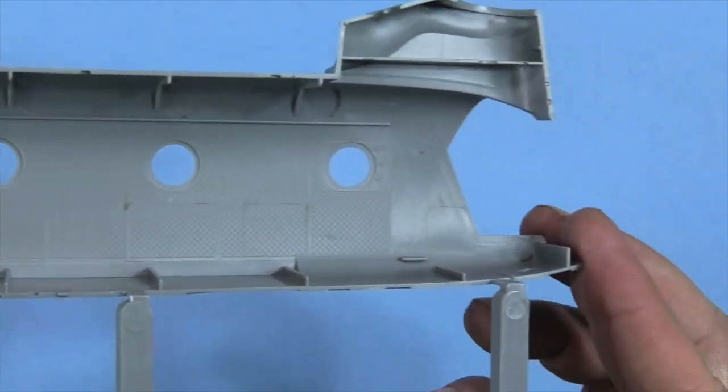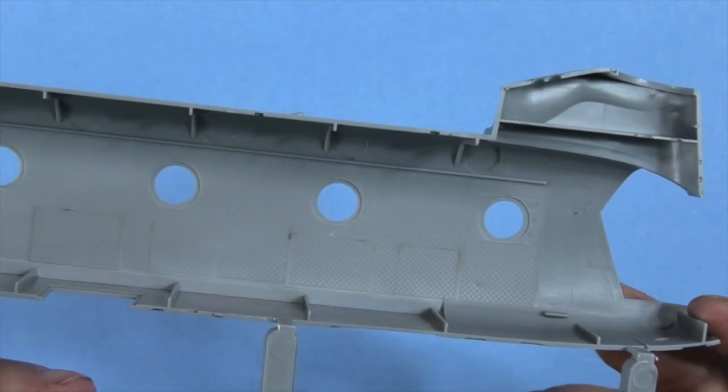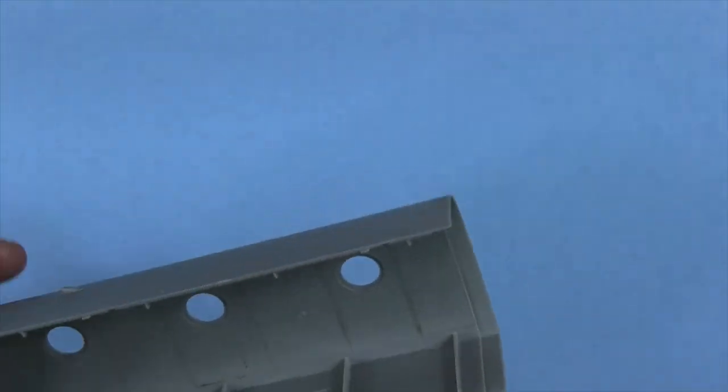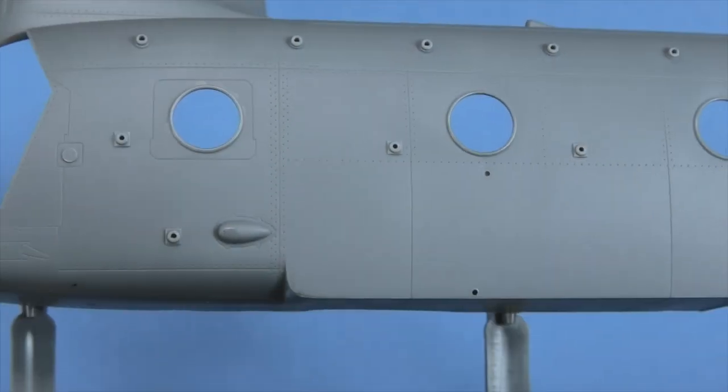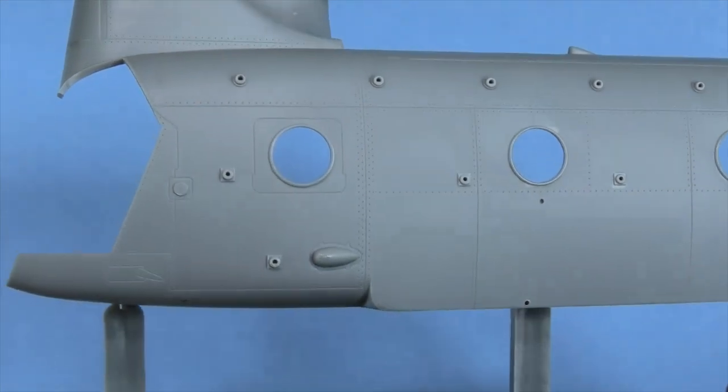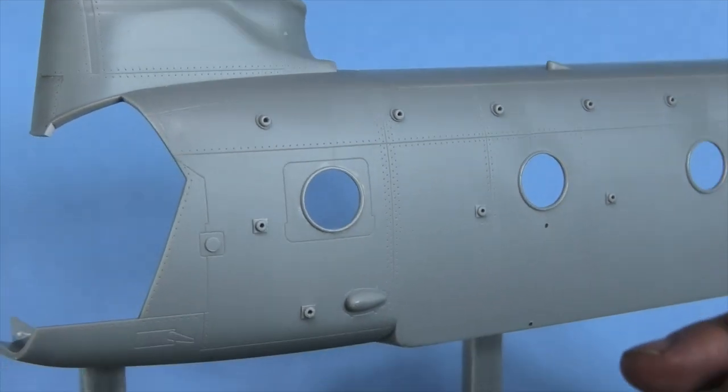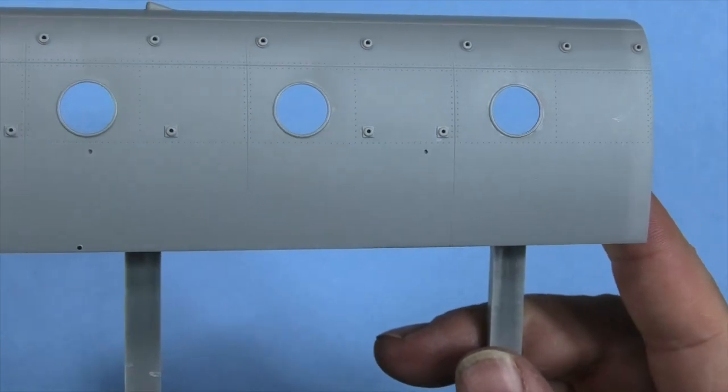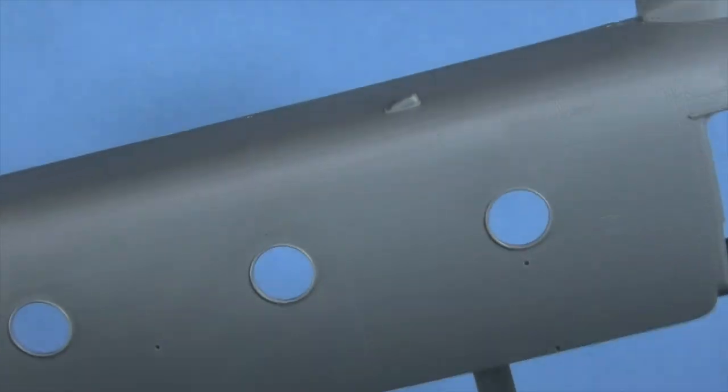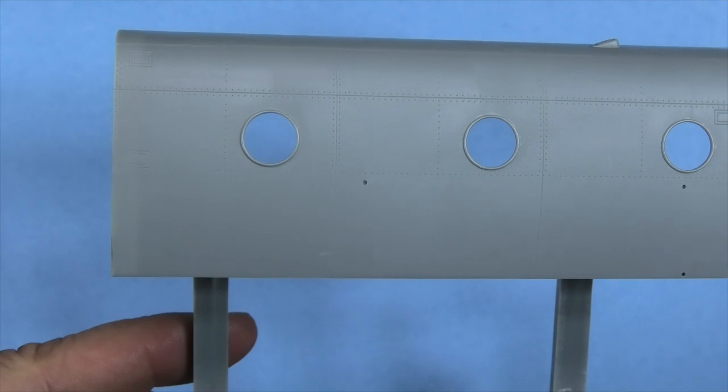Floor and the ceiling don't have any real detail. I see two ejector pin marks up front on both sides. And again, close up look, you can see that fine rivet detail all on there.